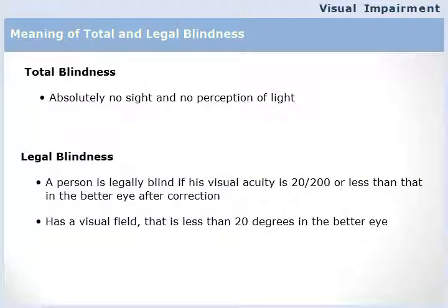Generally people think that anybody who is visually impaired is totally blind, but that is not the case. Total blindness is one type of visual impairment — when there is no sight and no perception of light. We also have people who have a visual acuity of 20/200 or less and a visual field of 20 degrees or less; they are called legally blind.